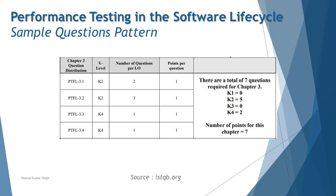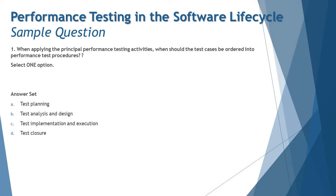Let's get started with the very first question, which is at K2 level: when applying the principal performance testing activities, when should the test case be ordered into a performance test procedure? These are straightforward at K2 level. Just being aware of the process of the fundamental test process where you generally align your test procedures of performance — it goes with the test procedure phase of our generic test process.